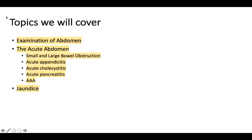The topics we will cover are: firstly, how to do an abdominal examination and what signs to look out for. Then we will move on to the acute abdomen — specifically small and large bowel obstruction, acute appendicitis, acute cholecystitis and biliary pathology, acute pancreatitis, and abdominal aneurysms. At the end, we will also look at jaundice — how to classify it, and how you would diagnose and treat someone who presents with jaundice.